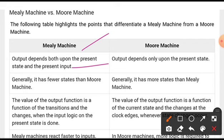Generally, the Mealy machine has fewer states. Moore machine has more states than Mealy machine due to this fact.